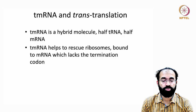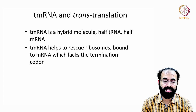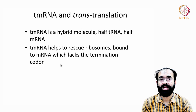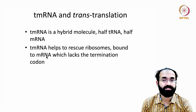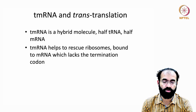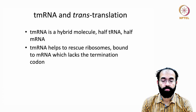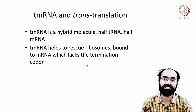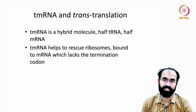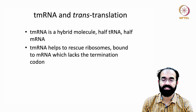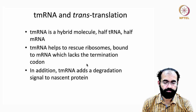tmRNA helps to rescue ribosomes bound to mRNA that lacks a termination codon. In the previous class we saw different RNA decay mechanisms like nonsense-mediated decay and no-go decay. But some cases need not end in degradation — if a tmRNA is available, the ribosome can be rescued. When there is no termination codon, the ribosome will read all the way to the tip of the RNA and get stuck.